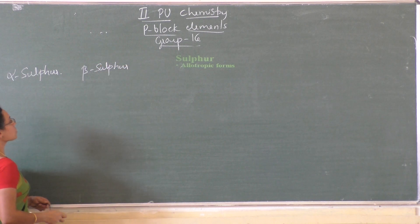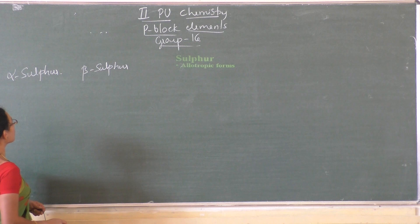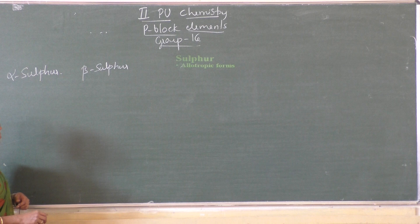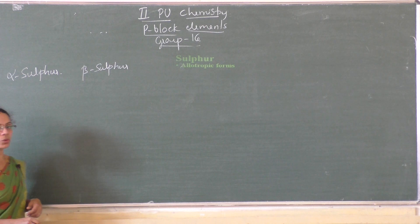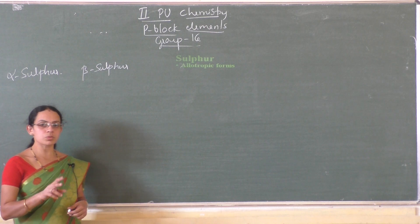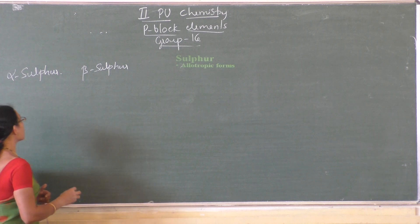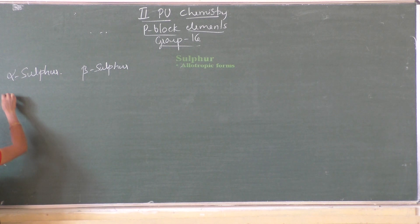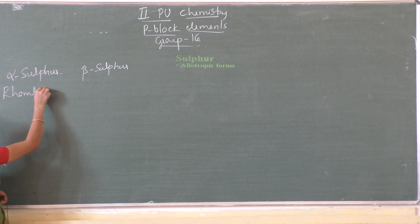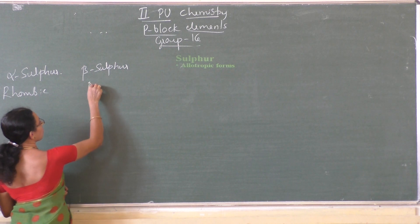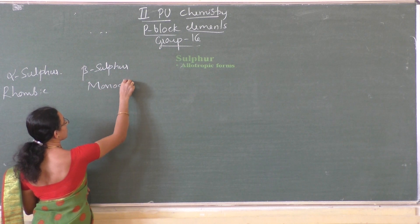Alpha sulfur is also called rhombic sulfur, and beta sulfur is also called monoclinic sulfur. These are the two types of crystalline forms of sulfur.